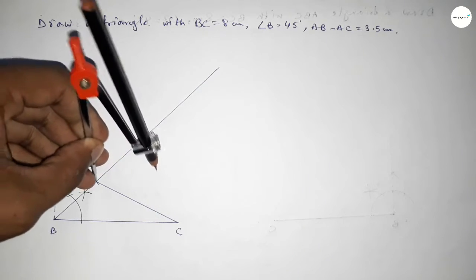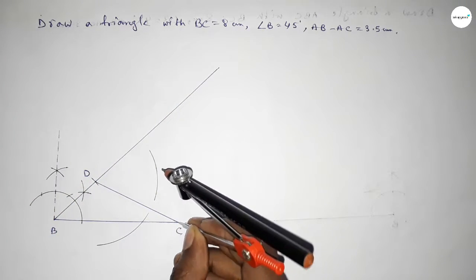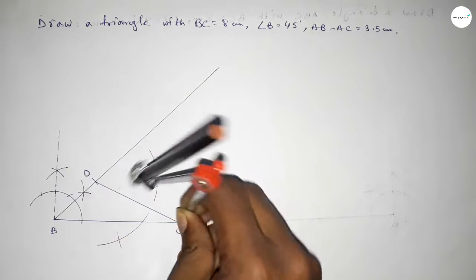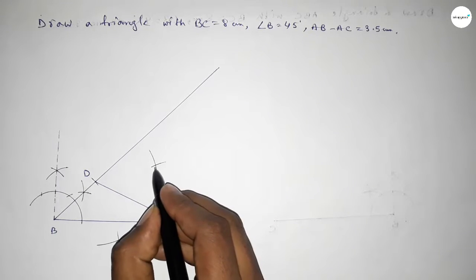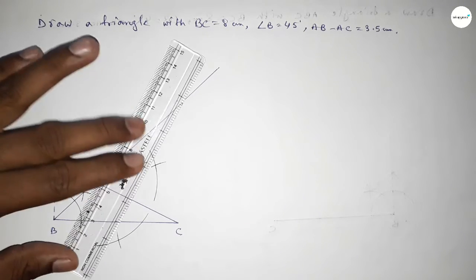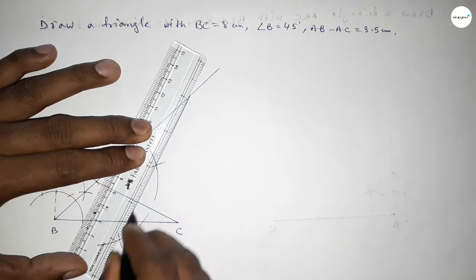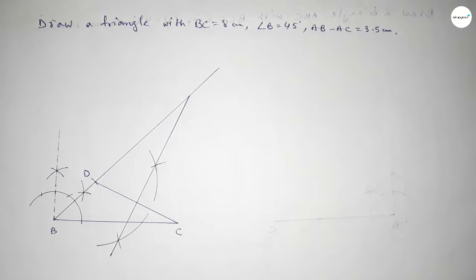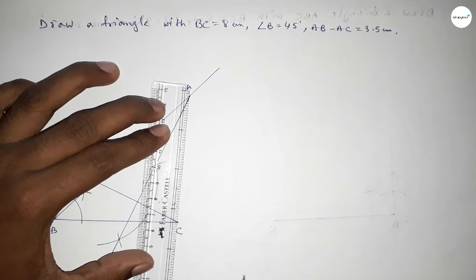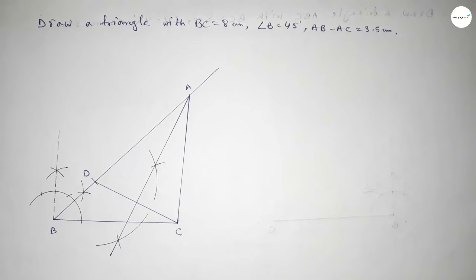Putting the compass here and taking greater than half of DC, drawing an arc. With the same length, putting the compass here and cutting here and here, so both curves intersect at two points. Joining this bisector, which meets the line at point A. Now joining A and C, and we got triangle ABC.